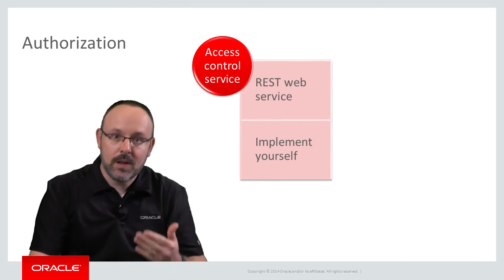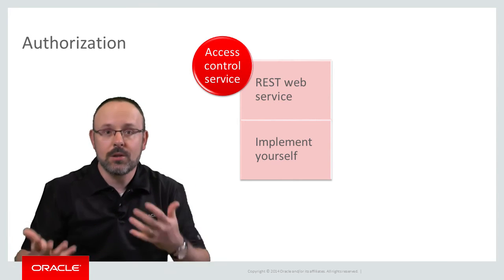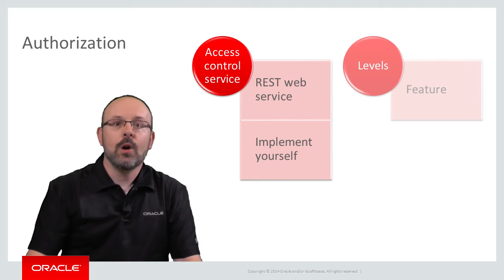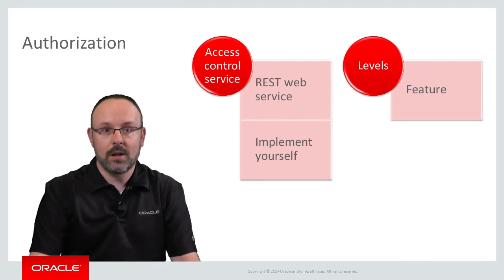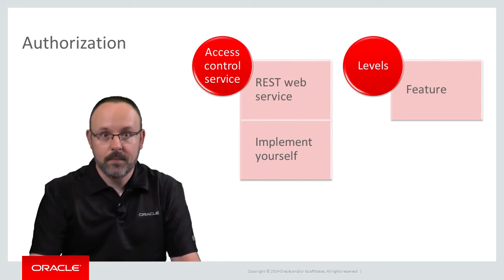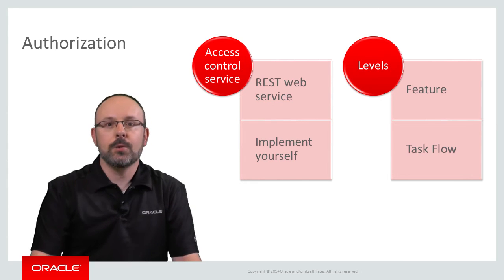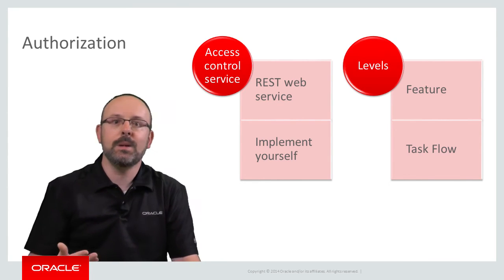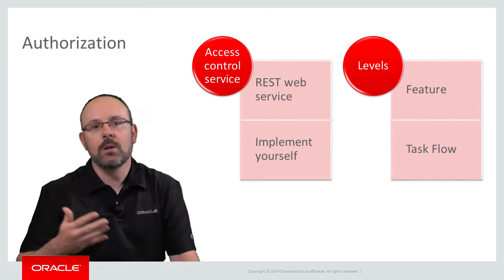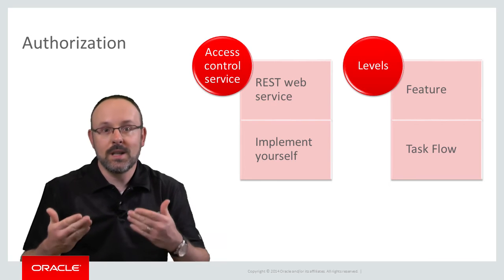There are three distinct levels of authorization in MAF applications, and you can use any combination of them. First, you can control access at the feature level by adding constraints that check for specific roles or privileges. Second, you can make authorization checks in task flows. Through expression language or Java code, you can check if the user is authenticated, if he belongs to a role, or if he holds a privilege. You can also obtain the username if the user is authenticated.